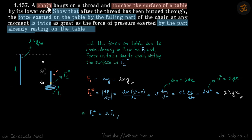A chain starts to fall on a surface. We need to show that the force exerted on the table by the falling part is twice that by the part already resting on the table.